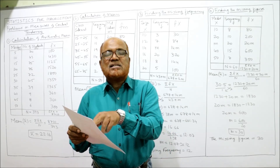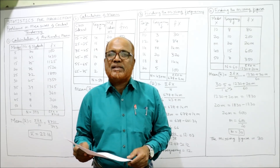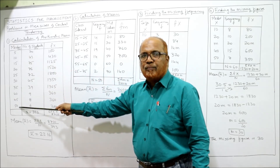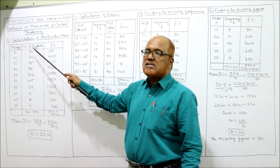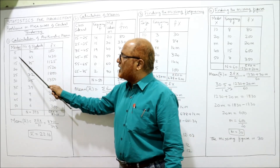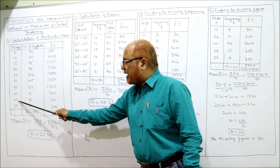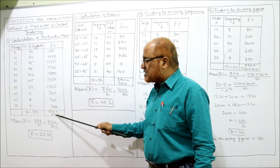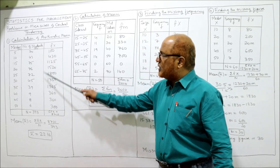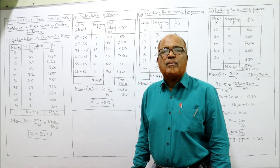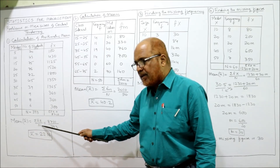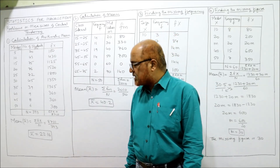We denote marks as X and number of students as F (frequency). Multiply F into X to get FX: 20 × 5 = 100, 43 × 10 = 430, and so on. Take the total: summation FX = 8710, and N (total frequency) = 393. The formula for mean is: Mean = ΣFX / N = 8710 / 393 = 22.16. That completes the first problem.